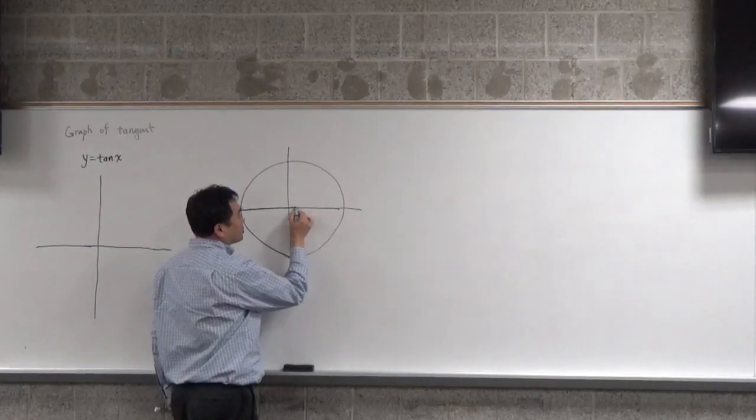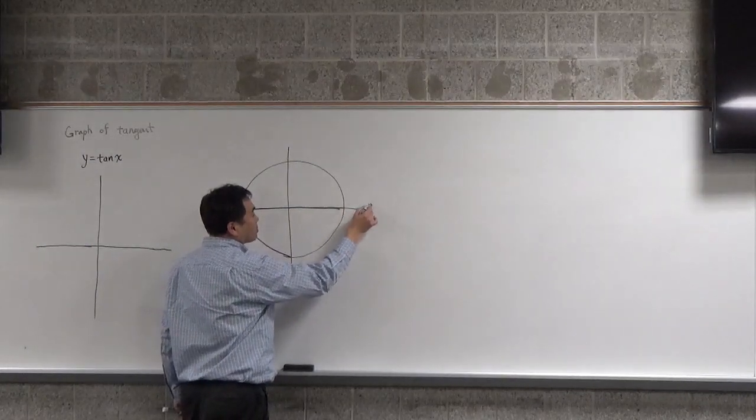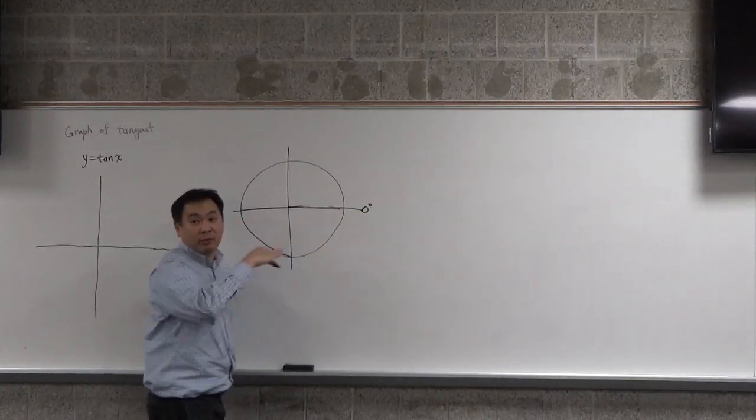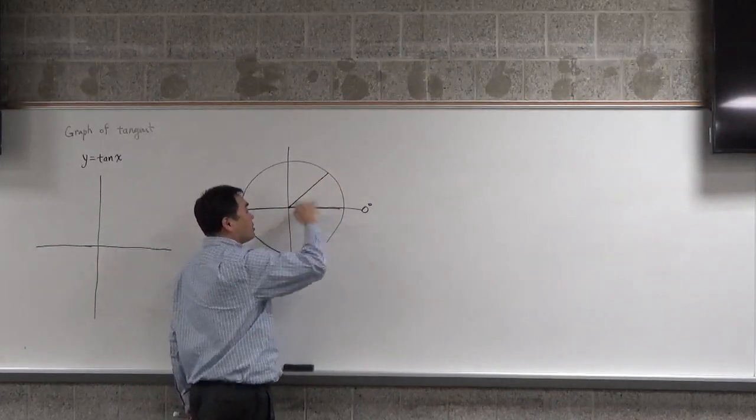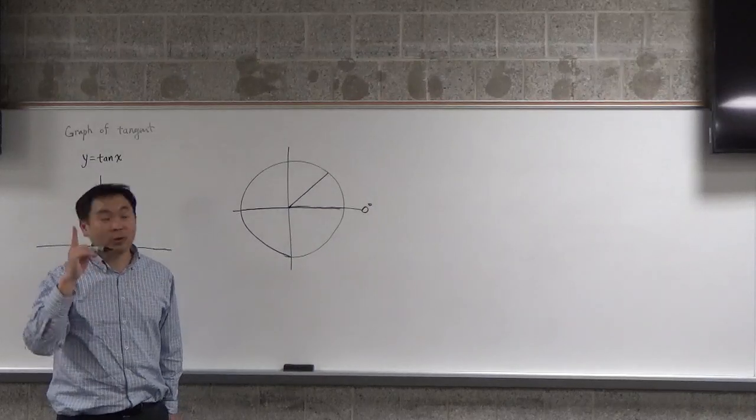So here at 0 degrees, these horizontal lines have slope of 0. And then 45 degree line has slope of 1.